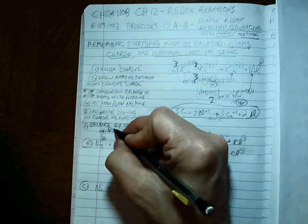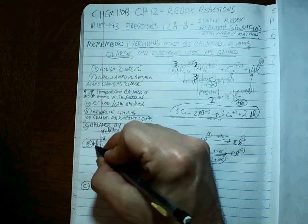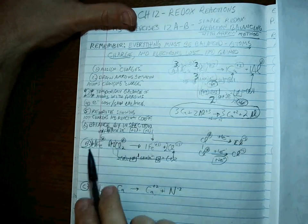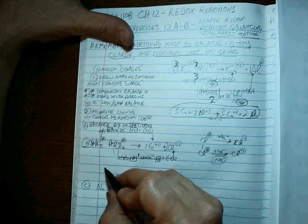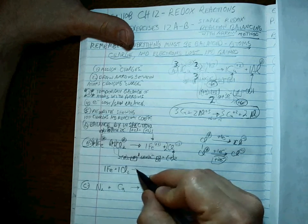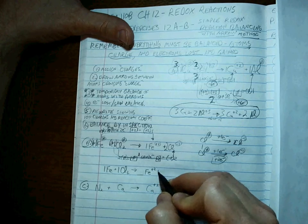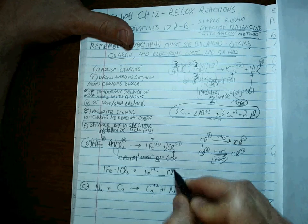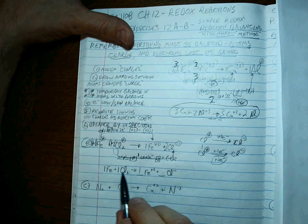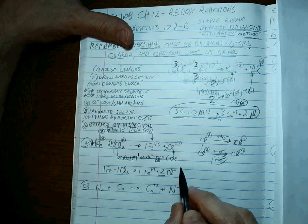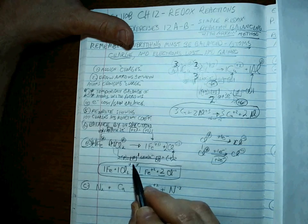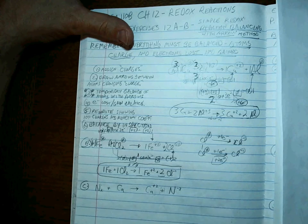With two electrons lost and two electrons gained, that's a one-to-one ratio. So the coefficient one comes here and one comes up here. Rewriting: one Fe plus one Cl₂ goes to some Fe²⁺ and some Cl⁻. Balancing by inspection: one Fe gives one Fe²⁺, two chlorines give two Cl⁻. Charges: zero and zero on the left; plus two and two times minus one on the right. That evens out.